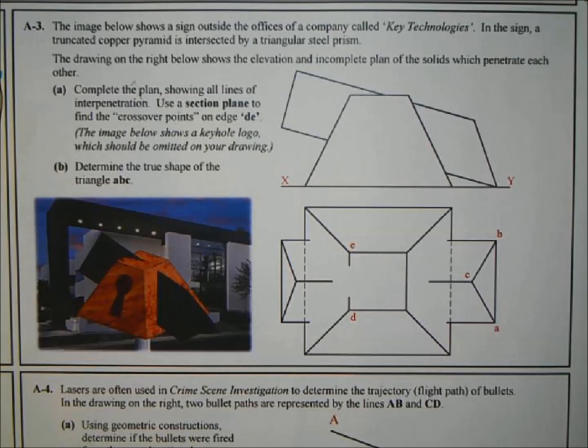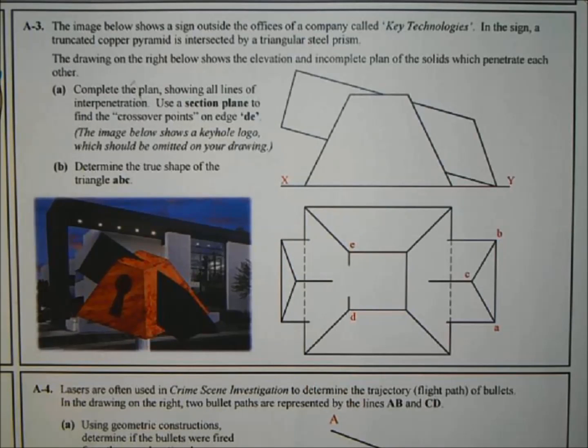Hi and welcome to another DCG tutorial. This is the 2013 paper, section A short questions, question A3. The image below shows a sign outside the office of a company called Key Technologies. In the sign, a truncated copper pyramid is intersected by a triangular steel prism. The drawing on the right shows the elevation and incomplete plan of the solids which penetrate each other. Part A: complete the plan showing all lines of interpenetration. Use a section plane to find the crossover points on edge DE. The image below shows the keyhole logo which should be omitted in your drawings. Part B: determine the true shape of the triangle ABC.